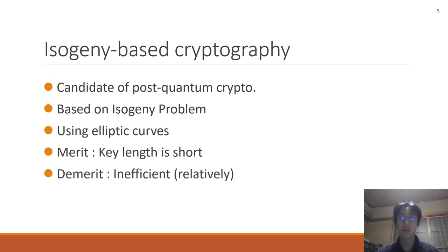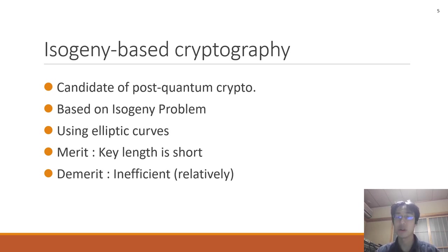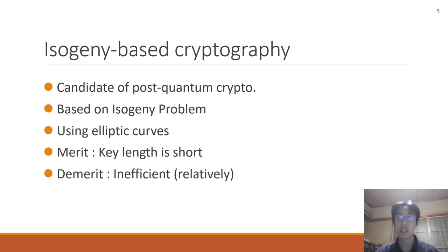Elliptic curves are used in isogeny-based cryptography. The main merit is that the key sizes are short. The main demerit is that isogeny-based schemes take more time than those of other candidates of post-quantum cryptography. These are the main properties of isogeny-based cryptography.